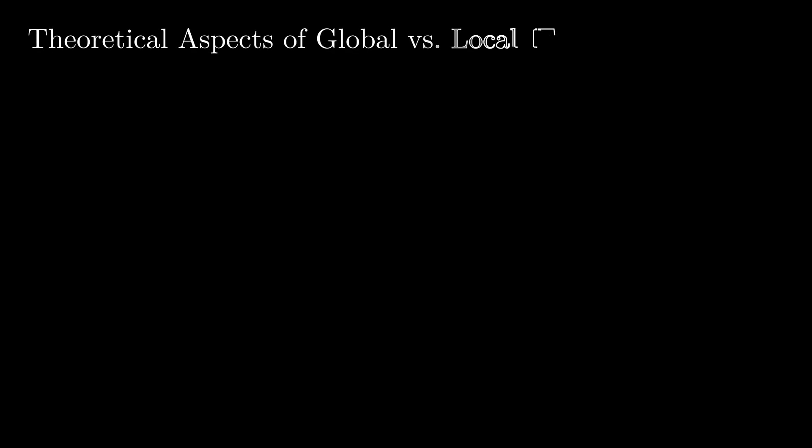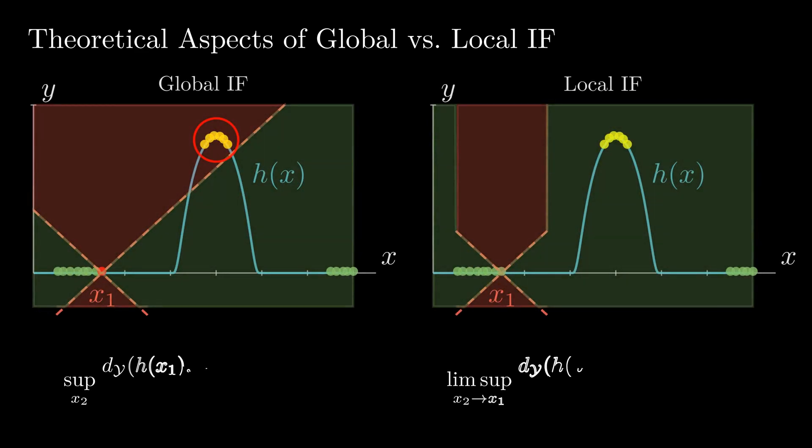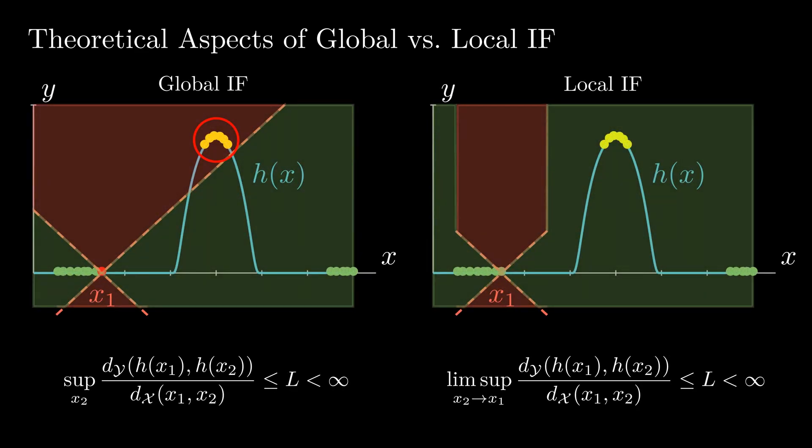Now, I will talk briefly about the theoretical aspect of our paper. In Global IF, the Lipschitz constraint must be applied on all pair of observations on the input space, whereas in Local IF, we only care about those pairs for which the fair distance is small. The first difference between the definition of Global IF and the Local IF is that we are replacing the Supremum by LIMSUP.